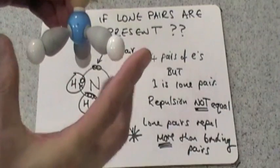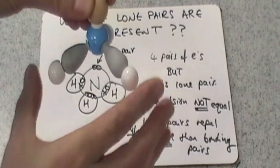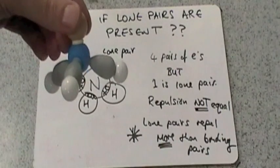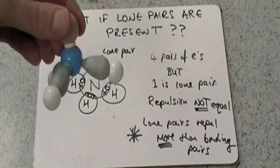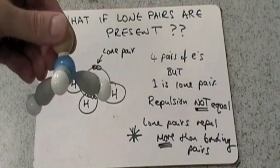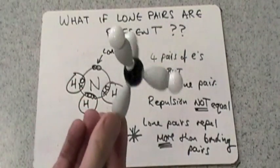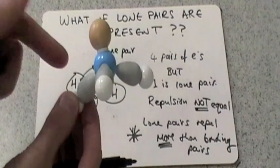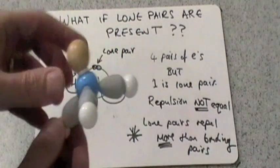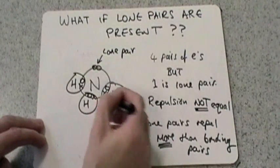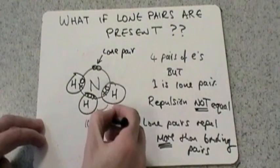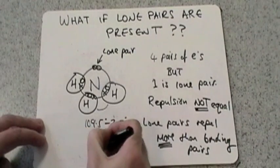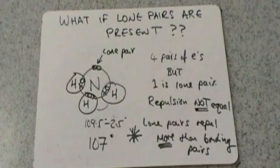As a rule of thumb, one lone pair will reduce the bond angle by 2.5 degrees. We still have four pairs of electrons, so our starting point is 109.5 degrees. But one of those pairs is a lone pair, so we subtract 2.5 degrees. The bond angle for ammonia is therefore 109.5 minus 2.5, giving a bond angle of 107 degrees.